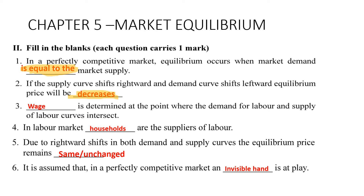Third: the wage rate is determined at the point where the demand for labor and supply of labor curves intersect. Fourth: in the labor market, households are the suppliers of labor.